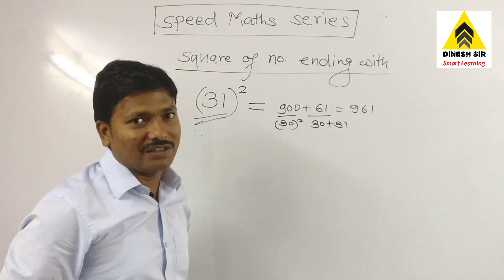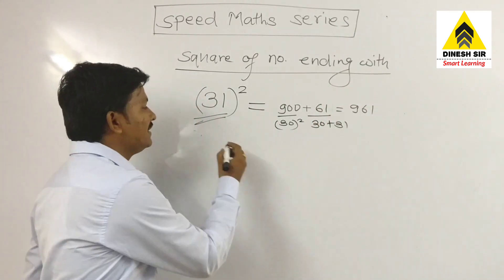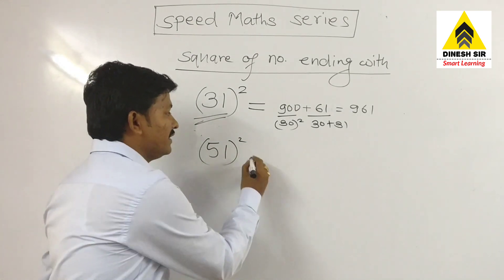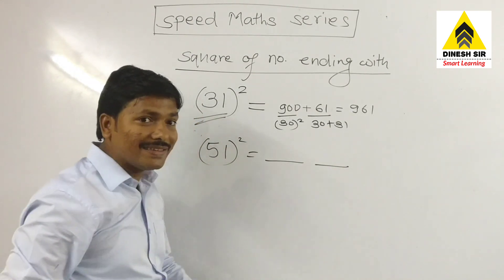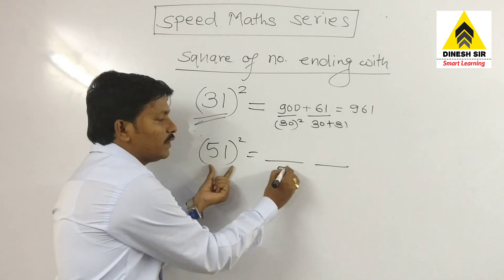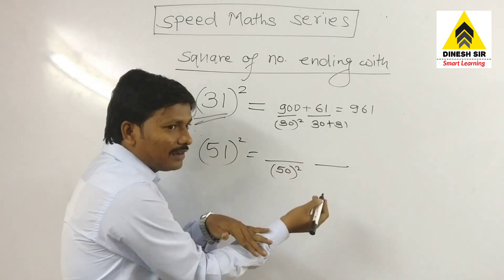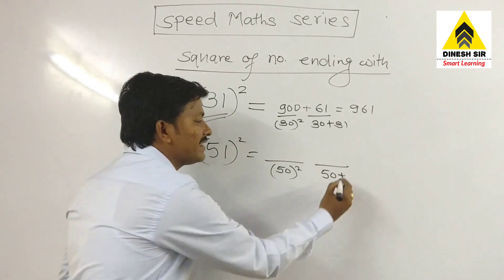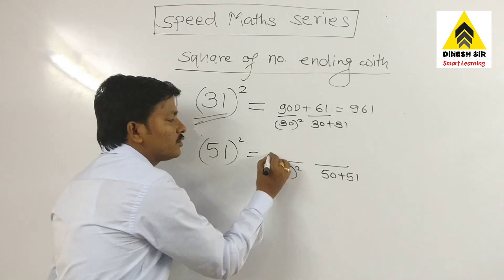So by simple method, you can find square of any number which ends with one. Let us see some more examples. If I have fifty-one square, in the same manner I have to take two places. In first place, take nearest number that is fifty square. In second place, take the same number with the conjugate number, means the next number.